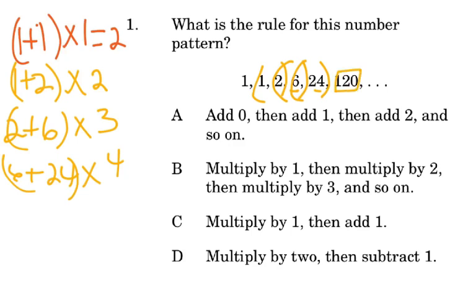So we can now find the rule that they are using: multiply by 1, then multiply by 2. If you notice, we go by 1, 2, 3, 4 and so on — the multiplier increases by 1 each time. So our answer here would be B.